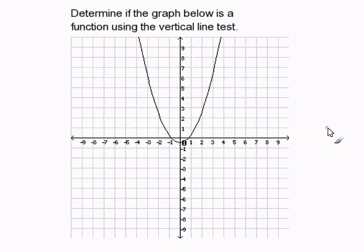Let's try another example. Here, I have a graph and I'm going to draw my vertical line. And as you can see, my vertical line intersects the graph only at one point.